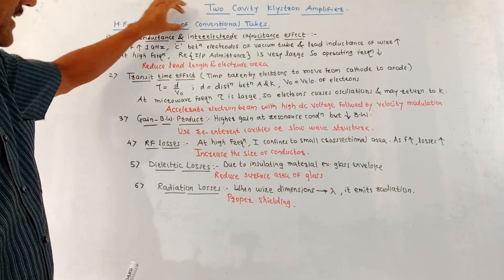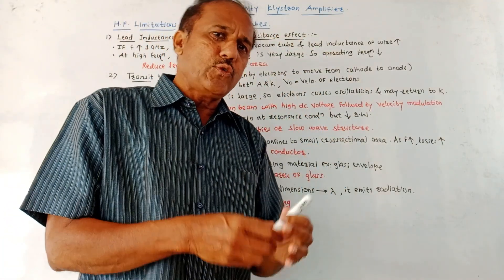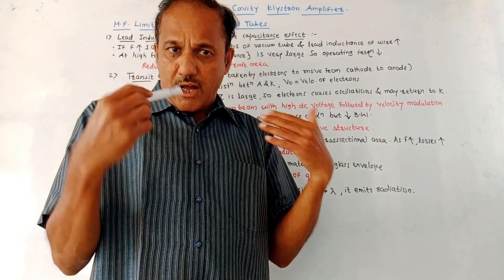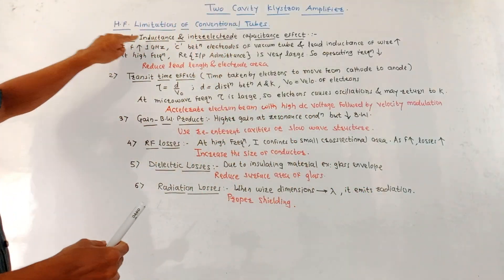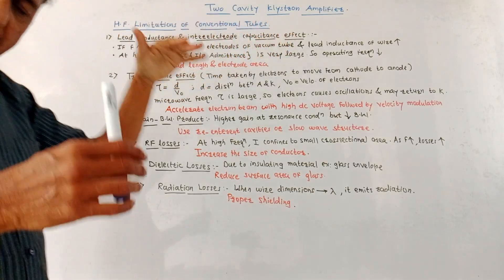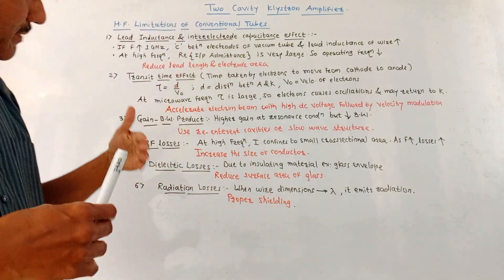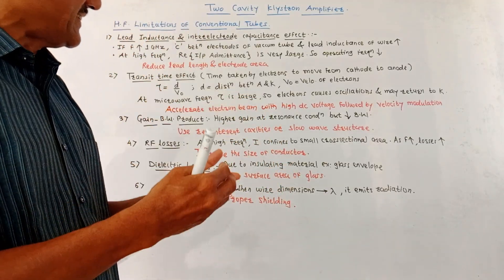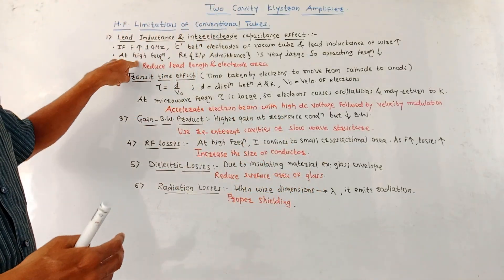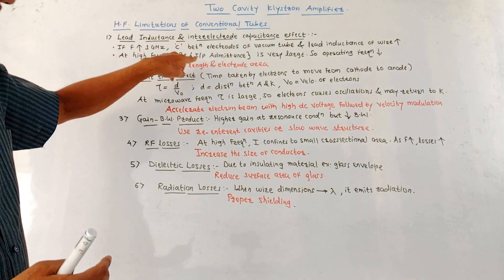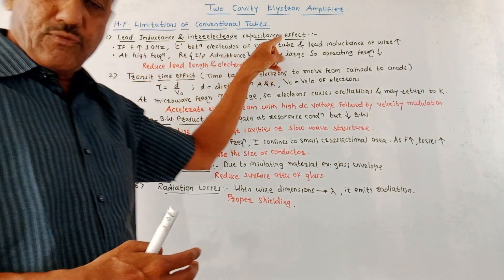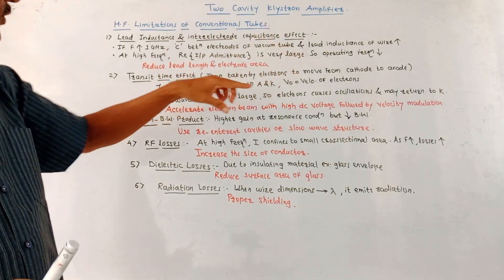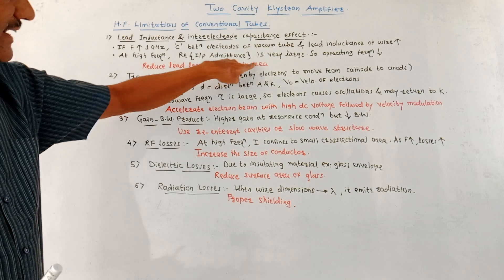The first part is high frequency limitations of the conventional tube. From the exam point of view, you may expect a question like: what are the high frequency limitations of the conventional tubes and how can they be avoided or minimized? The first limitation is lead inductance and inter-electrode capacitance effect. As the frequency increases beyond 1 GHz, the capacitance between the electrodes as well as lead inductance of the wire increases. At higher frequencies, the real part of the input admittance is very high, because of which the operating frequency of the tube is reduced and it affects the performance. To avoid this limitation, reduce the lead length and electrode area.